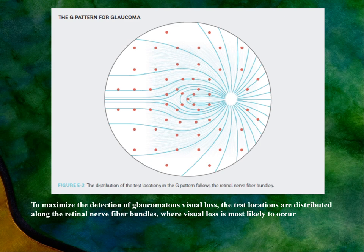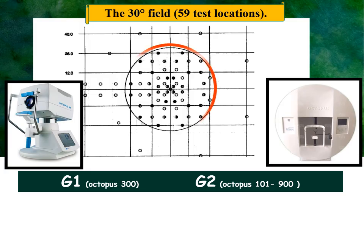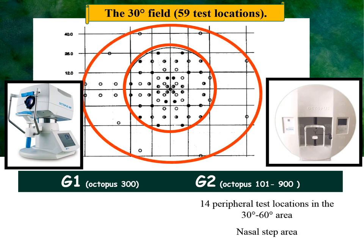In the Octopus, test locations are chosen in relation to the anatomical spread of the nerve fiber layer. There are two programs: G1 and G2, both testing the same points in the central 30 degrees as previously described. The G2 program additionally tests 14 points between 30 and 60 degrees, especially concentrating on the nasal area to check for the nasal step.